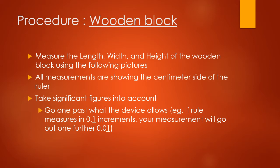All measurements are showing the centimeter side of the ruler, so the length, width, and height will be measured in centimeters. It's important to take significant figures into account. When using measuring devices in lab, we need to use them correctly and include all the significant digits. This means going one past what the device allows. For example, if a ruler measures to 0.1 increments — to the tenth place — your recorded measurement should go one further, to the hundredths. So you should be reporting to two decimal places for your length, width, and height.